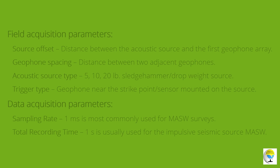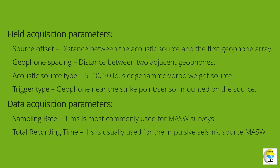Prior to the field test, acquisition parameters such as source offset, geophone spacing, acoustic source type, and trigger type must be selected. A sampling rate of 1 millisecond is most commonly used in MASW surveys. A total recording time of 1 second is usually used for impulsive seismic source MASW surveys.